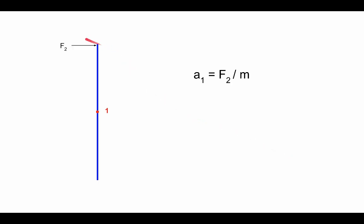If you consider applying a force at a different position — force f2, which is the same magnitude as f1 but applied up here instead of in the middle — the acceleration of the center of mass is still given by f2 divided by the mass of the rod. So the question is: why would the acceleration of the center of mass not change even if you're applying a force at a different position? That's what I want to talk about in this video.